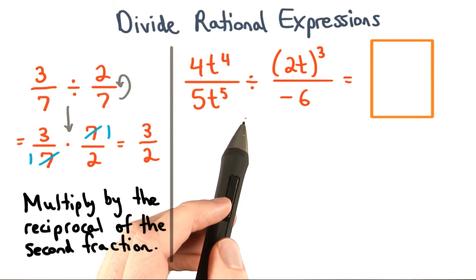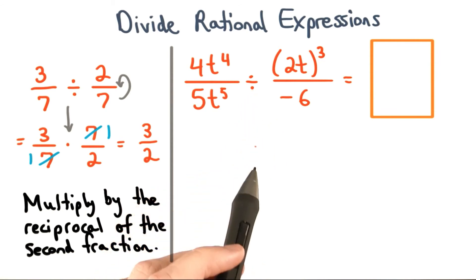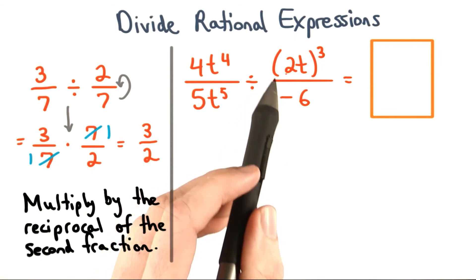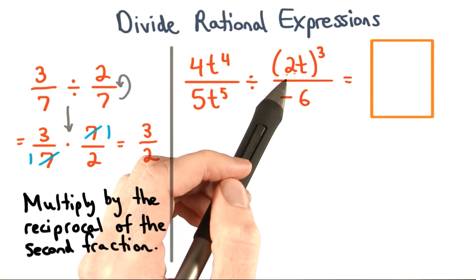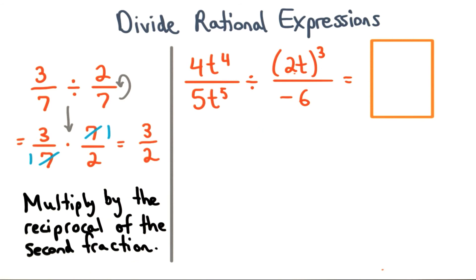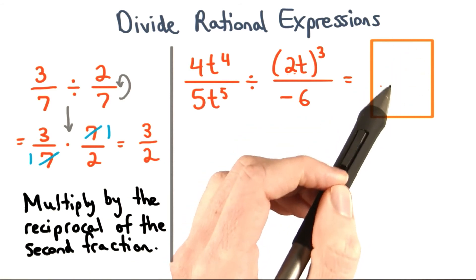So try doing this rational expression problem. Change the division to multiplication and multiply by the reciprocal of this fraction. Make sure you find the cube of 2t before you multiply. When you think you've got it, write your answer as a fraction here.